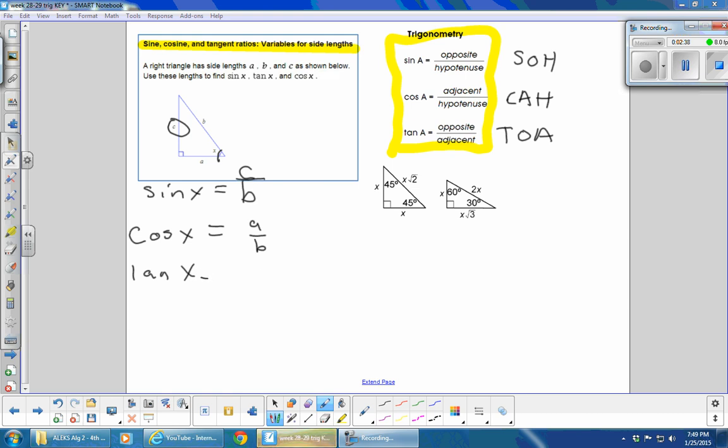And then the last one, tangent. Tangent is going to be opposite, which is C, divided by adjacent, which is A, so it's C over A.